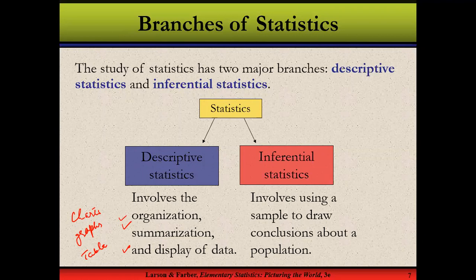Raw data can be very cumbersome to understand. When information is represented in the form of a graph, chart, or table, it becomes more meaningful and easy to understand, and it shows you many hidden trends in the data. That is the part of statistics called descriptive statistics — by descriptive, we mean we only describe the data.